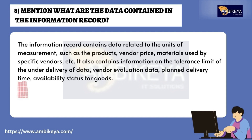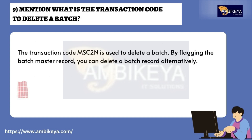Question number eight: mention what data is contained in the information record. The information record contains data related to units of measurement, the product's vendor price, materials used by specific vendors, etc. It also contains information on the tolerance limit for under-delivery, vendor evaluation data, planned delivery time, and availability status for goods.